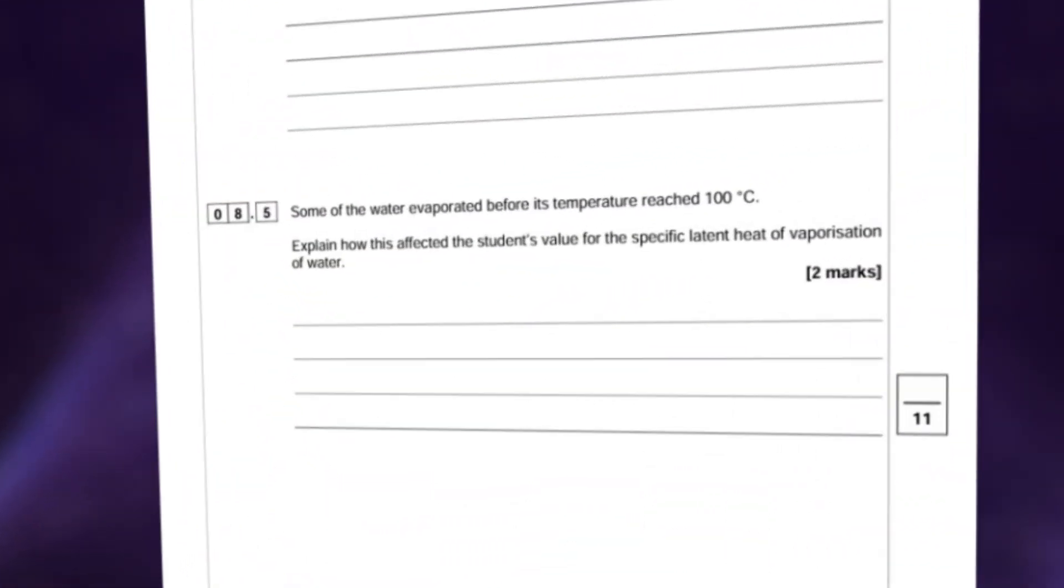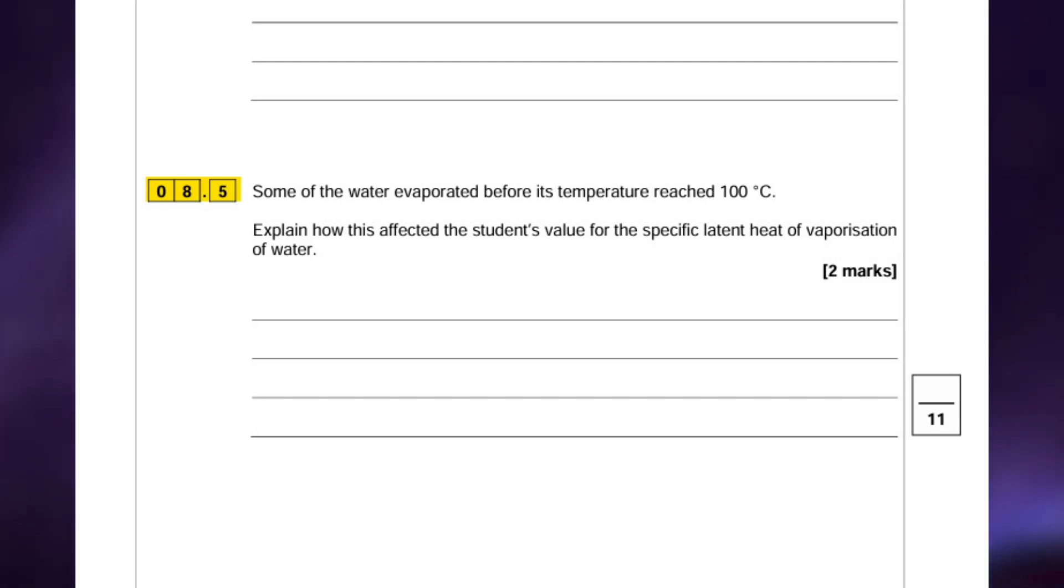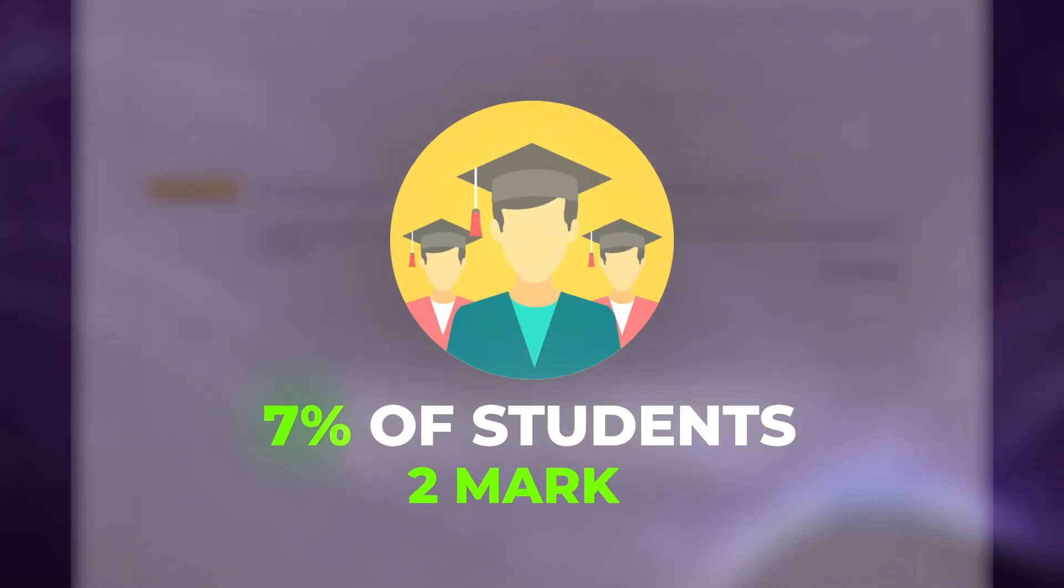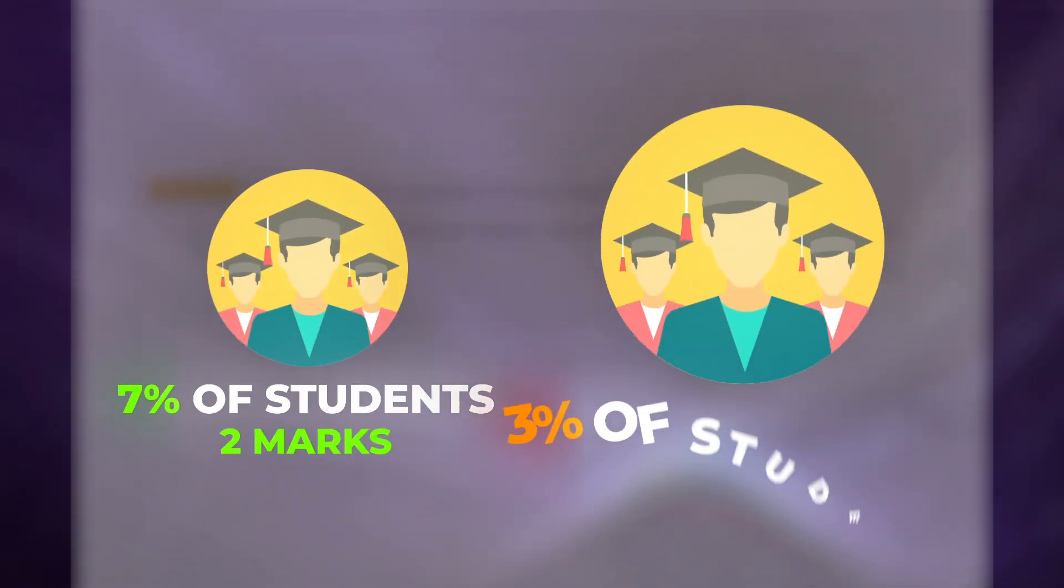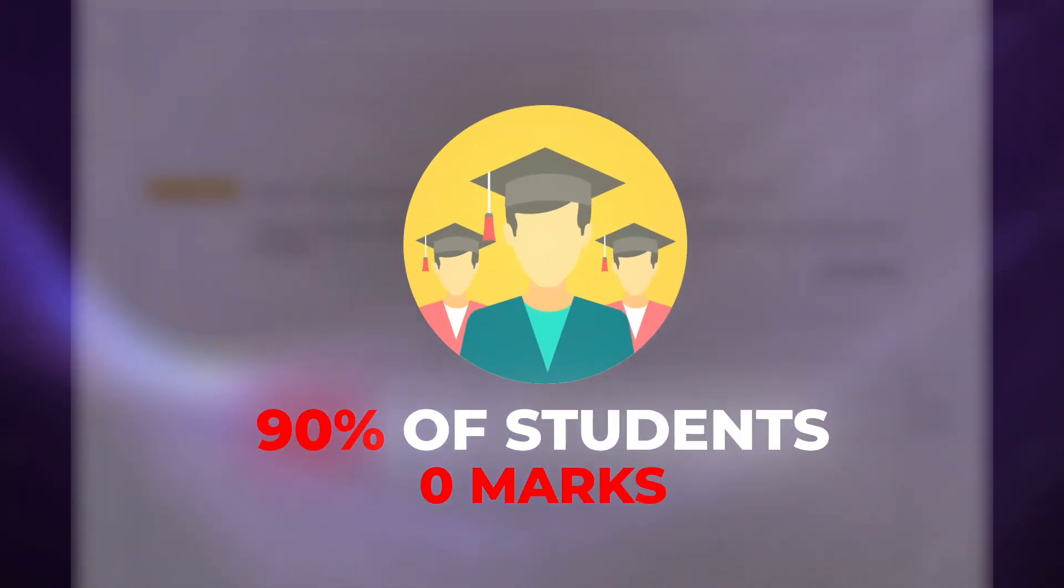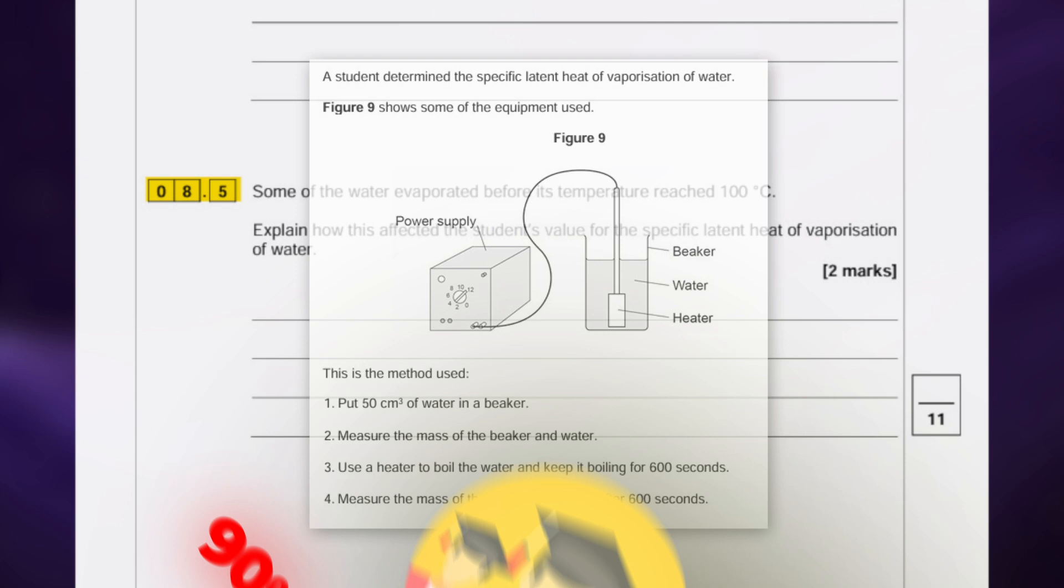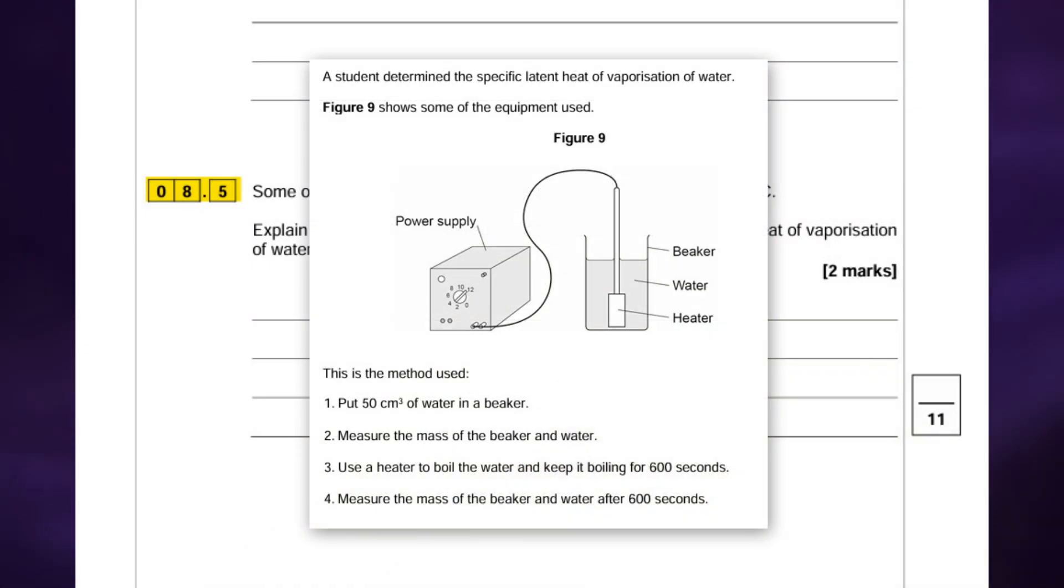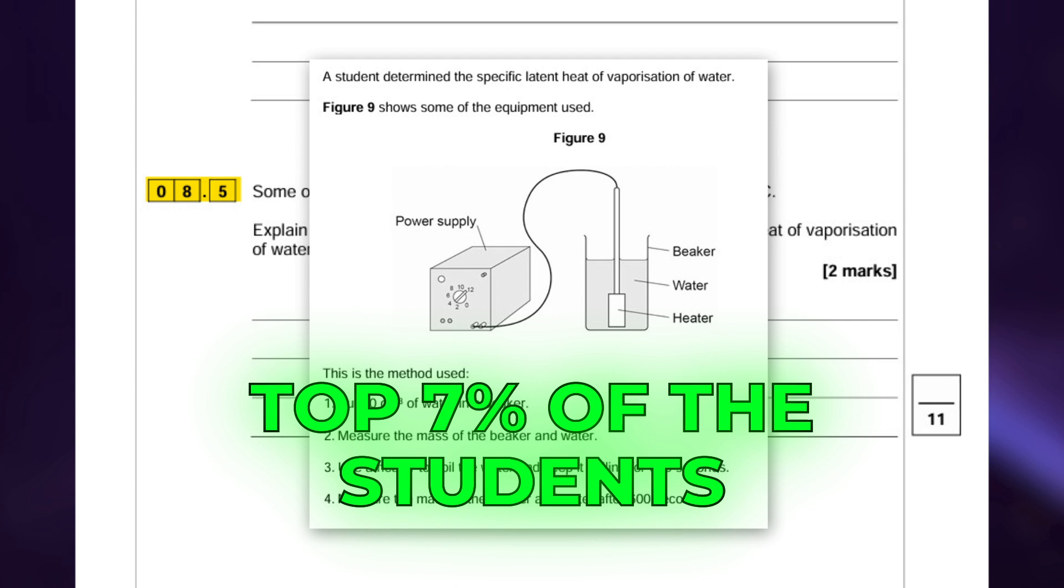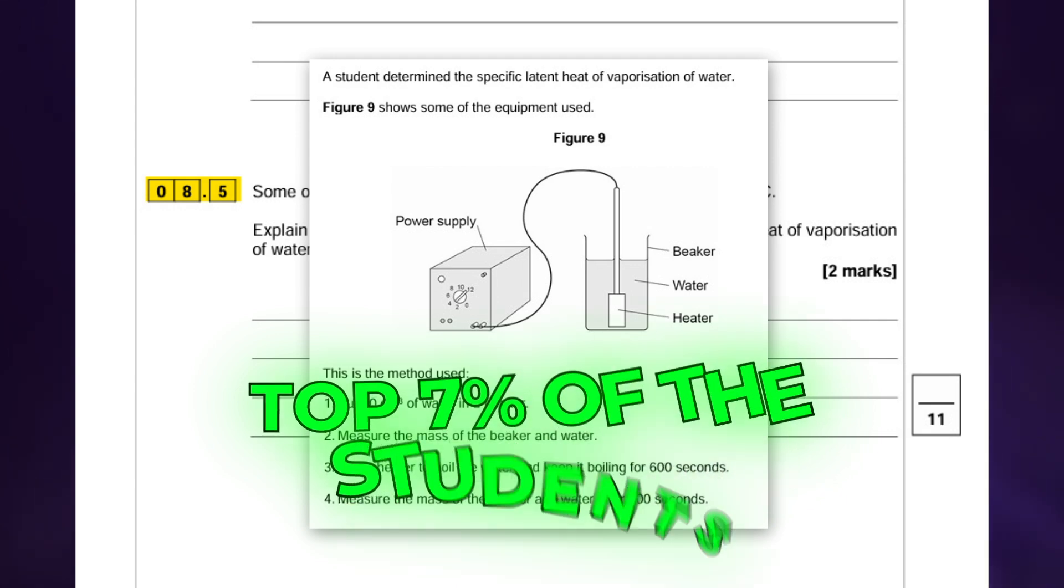The next poorly answered question was question 8.5. 7% of students scored two marks for this and 3% scored one mark, leaving 90% of students getting zero for this question. And for context I'll leave the experiment on the screen here that the question is talking about, so feel free to pause it here, have a go and see if you're in the top 7% of students that got the full marks for this question.